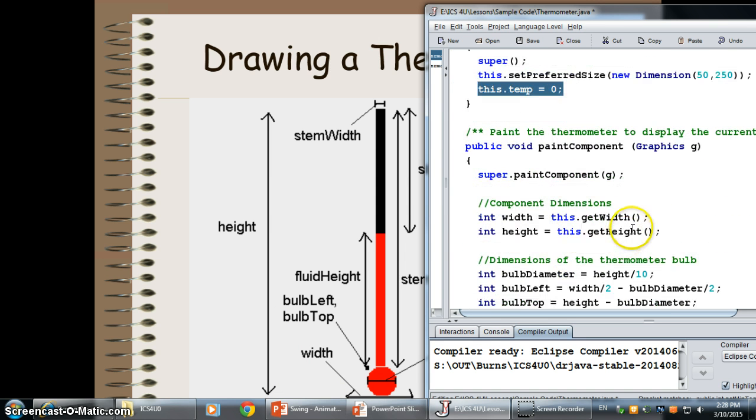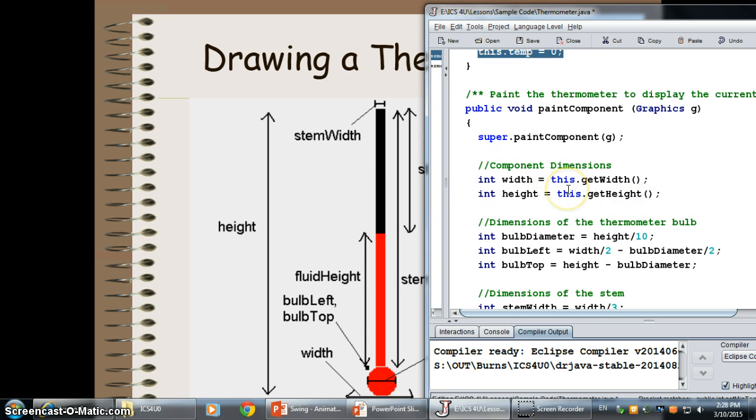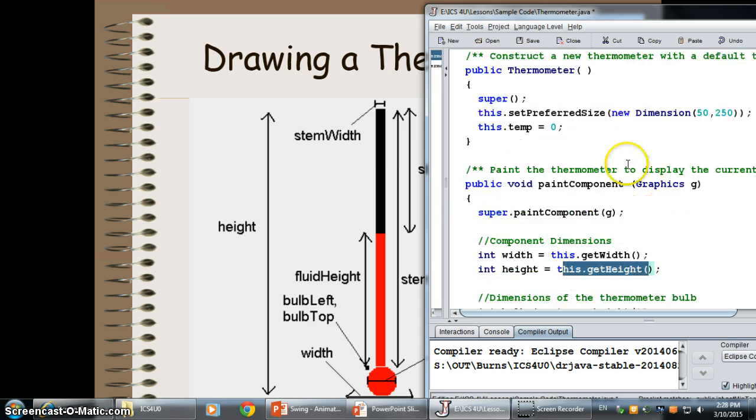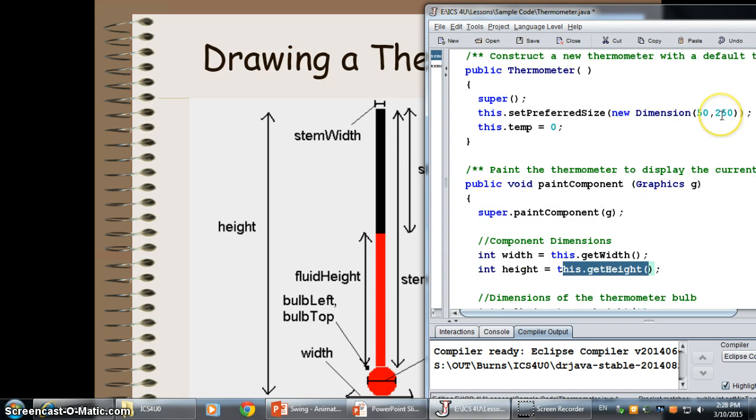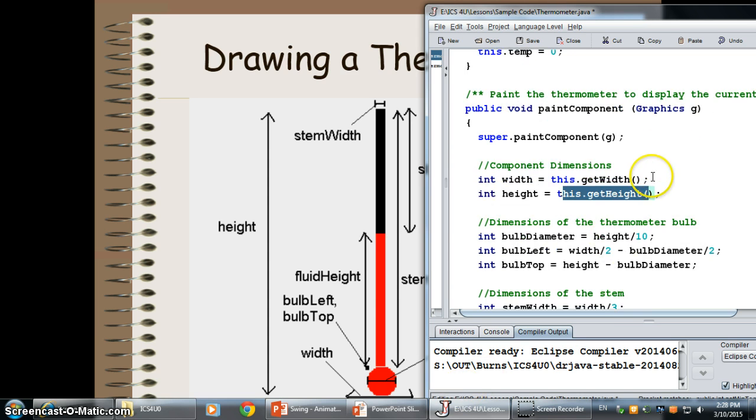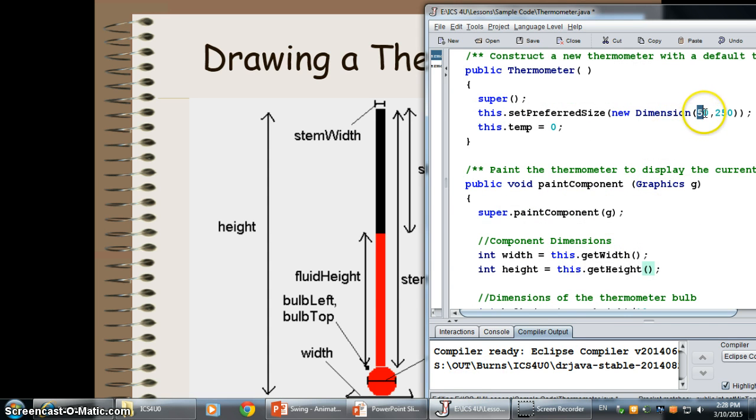To paint my component, here's where I need to figure out what this is going to look like. The dimensions of my component are essentially going to be the dimensions that I created up above in my set preferred size method. To figure out the size of my bulb, the bulb diameter is going to be the height of the component divided by 10. So, the height is 250, so the width is going to be 25, which is essentially half the width of my actual component itself.